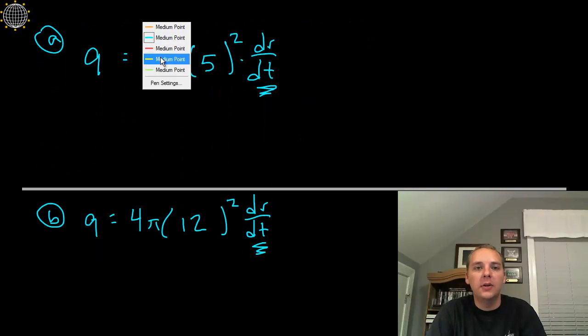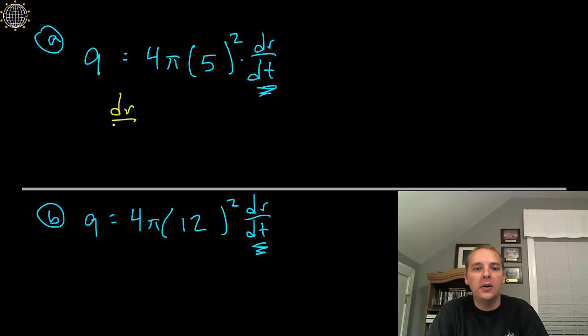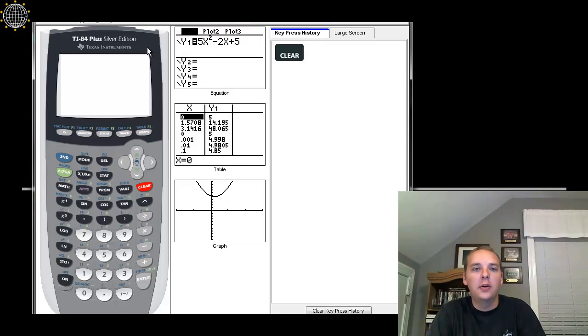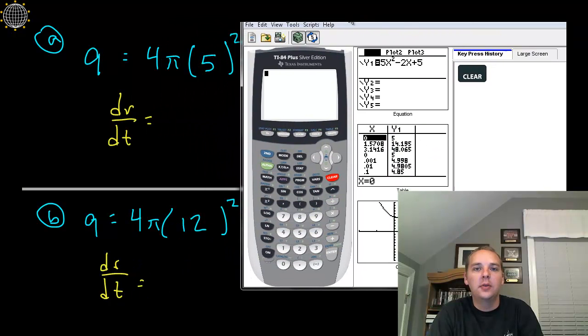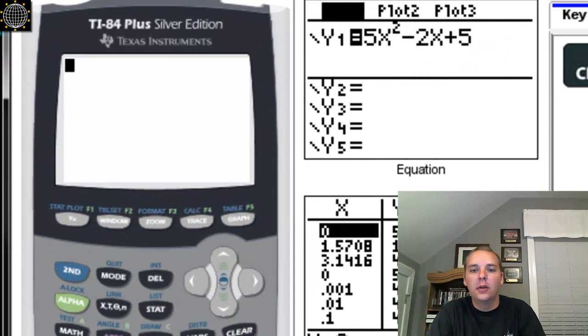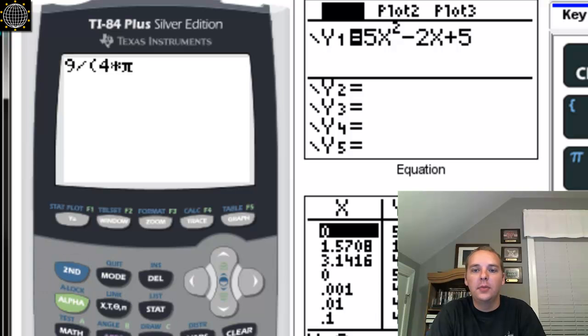Alright, so final answer, dr dt would be... we're going to need a little calculator help here. Okay so let's see, it would be 9 divided by the quantity 4 pi times 5 squared. Be careful with your parenthesis.